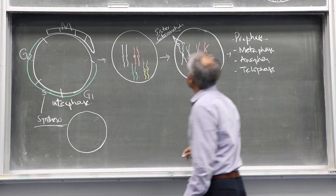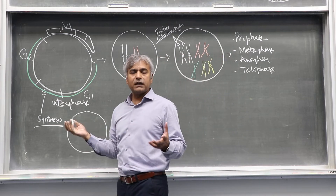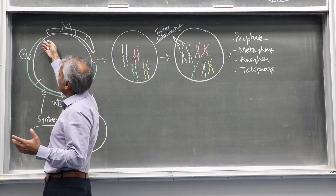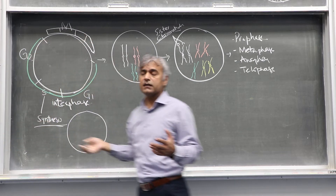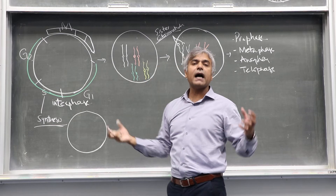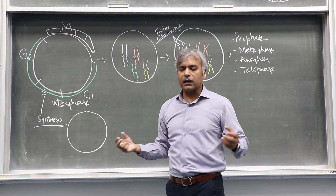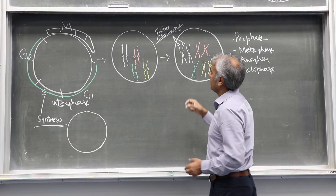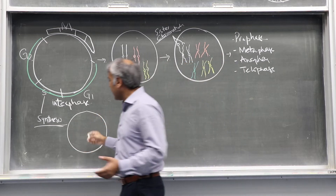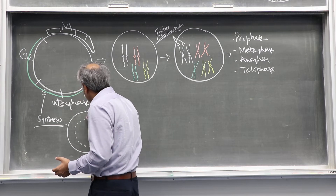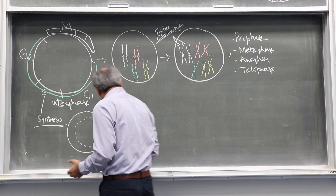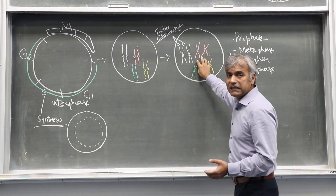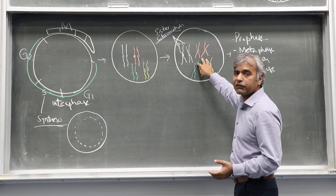During prophase, the chromosomes which are normally not visible — as soon as a cell passes through the G2 and enters into mitosis — all the chromosomes become highly condensed. This condensation or compaction is what makes such structures visible. Within the nucleus, you have all four chromosomes. These are what we normally call metaphase chromosomes.